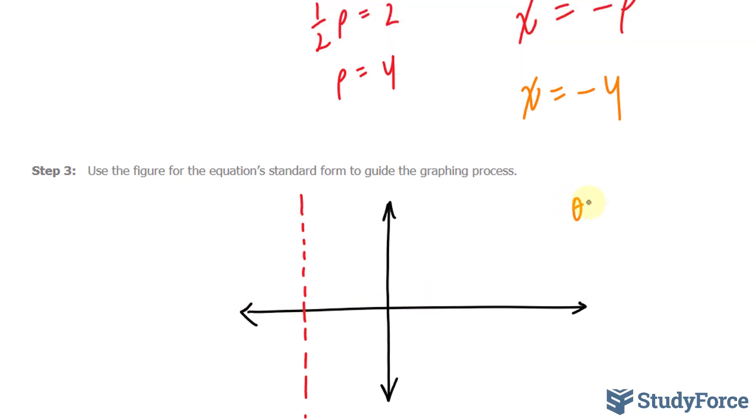So we'll set theta equals 0 radians and theta equals pi radians. Think about it. If you had an ellipse, it would be like this, what I'm hovering around, and you would have one point along 180 degrees and another point along 0 degrees. We're working with a polar plane, not an xy plane, so keep that in mind.